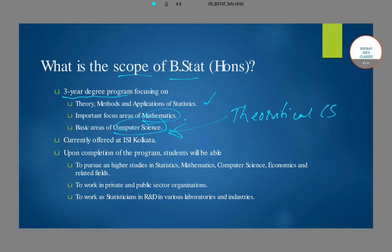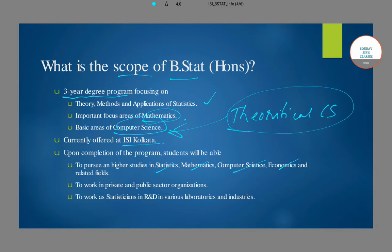ISI has various campuses all over the country, but currently the B.Stat Honours program is only offered at the ISI Kolkata campus. Now let's talk about the career prospects after completion of the B.Stat program. Most students go for an academic career, which can be in various fields — statistics, mathematics, computer science, economics, and other related fields, including theoretical computer science.